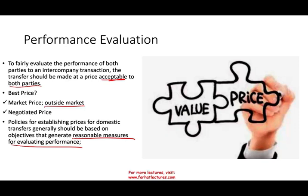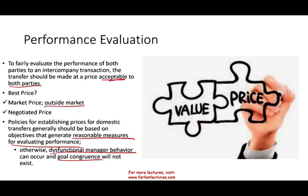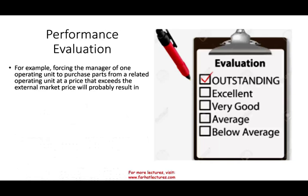This way you can evaluate them — whether they are profitable, meeting the profit margin, or meeting the return on investments. Otherwise, dysfunctional manager behavior could occur and goal congruence will not exist. Goal congruence is when different subsidiaries all work in the same direction for the overall profit of the company. For example, forcing one manager to purchase parts from a related unit at a price exceeding the external market price is not good behavior.